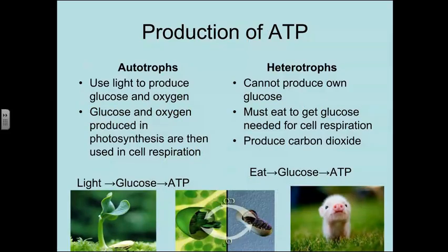Production of ATP is slightly different in autotrophs compared to heterotrophs. Autotrophs use light to produce glucose and oxygen through photosynthesis, and then they take that glucose and oxygen and use them in cellular respiration. So they take light energy, store it as chemical bond energy in glucose, and then convert it to chemical bond energy in ATP.